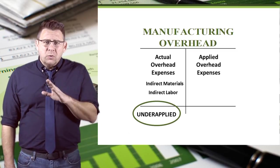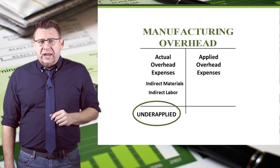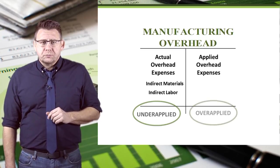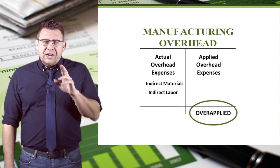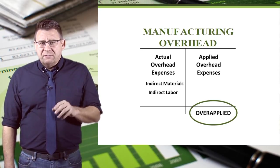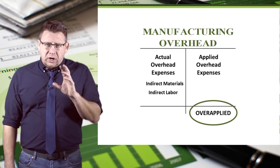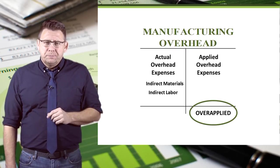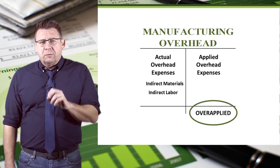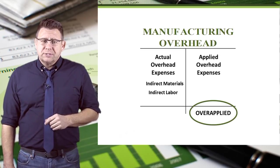Another way to think of under-applied is that too little overhead has been applied to the jobs. A credit balance in manufacturing overhead at the end of the period means that overhead is over-applied — another way to think of that term is too much overhead has been applied to the jobs.